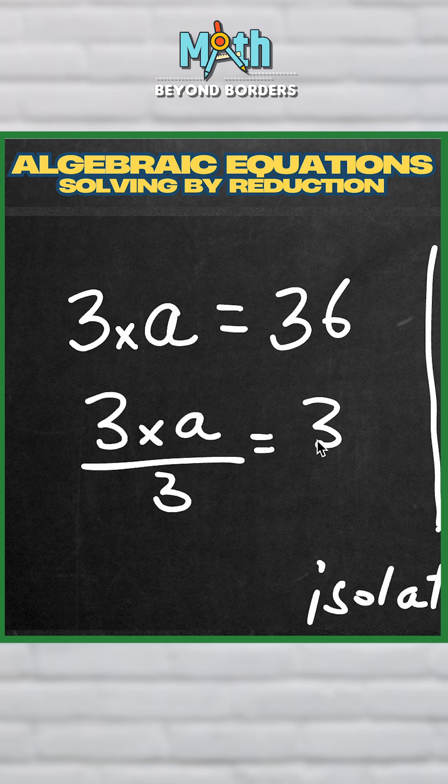equals 36 divided by 3 as well. Remember, whatever action you take on one side, you also take on the other side. That's the main idea. It can be any action, but in this case,